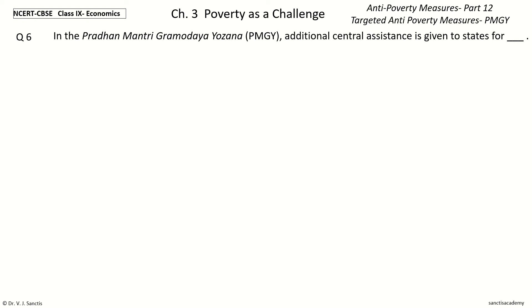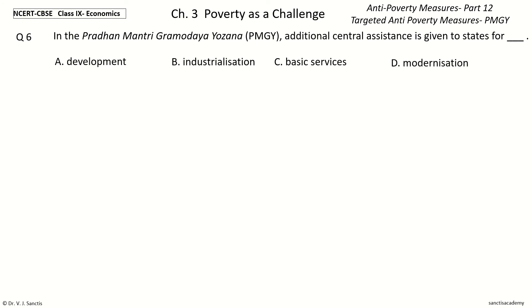In the Pradhan Mantri Gramodaya Yojana (PMGY), Central Assistance is given to States for blank. The options are: Development, Industrialization, Basic Services, or Modernization. Your time to choose. And the answer is Basic Services.